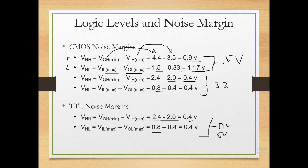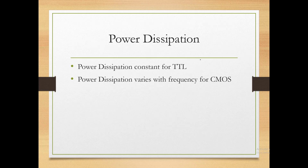Looking at these figures, the 5V CMOS series has the highest noise margin compared to all others: 0.9V and 1.17V, as compared to 0.4V for both 3.3V CMOS and TTL. If we evaluate technologies based on noise margin, 5V CMOS performs the best.